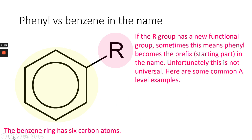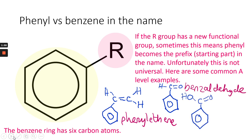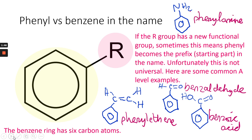If the R group has a new functional group, then sometimes this means phenyl becomes a prefix in the name. Unfortunately it's not universal or fixed, but here are some common A-level examples for our specification. Ethene with a phenyl group attached is called phenylethene, and an aldehyde group with a benzene ring attached is called benzaldehyde. We also have benzoic acid, phenylamine, and phenylethanol.